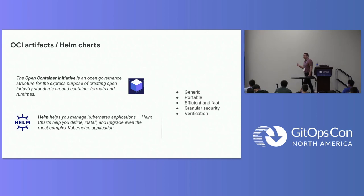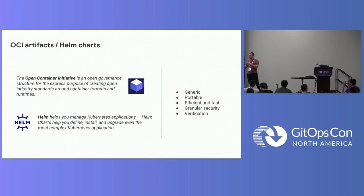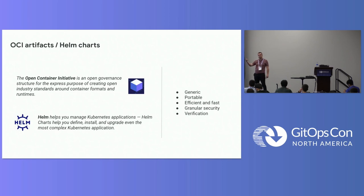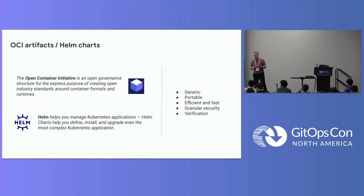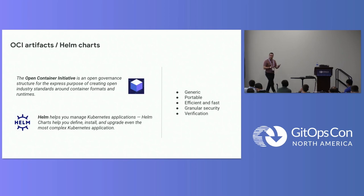There are multiple advantages to OCI artifacts. It's generic — any files. It's portable, so it's a package you can share across your company. It's efficient and fast because OCI artifacts can be stored in an OCI registry, just like Docker pull on a container registry. You do an OCI artifact pull, which is very granular from a security perspective. And like containers, you can apply attestation, verification, Cosign, and other tools to sign and attest your OCI artifacts.